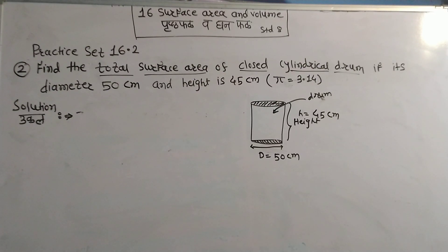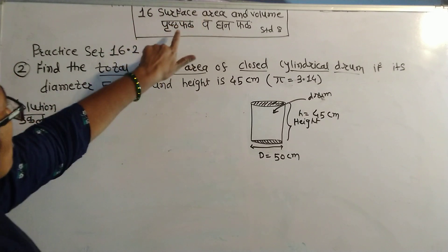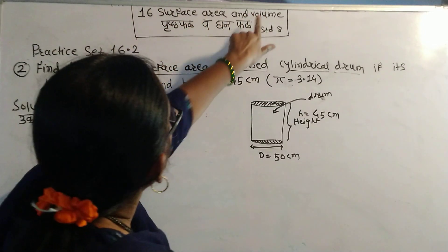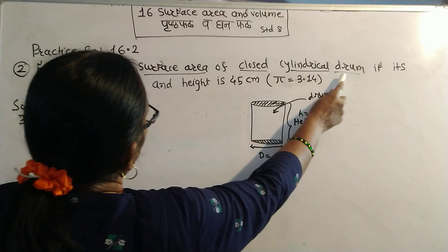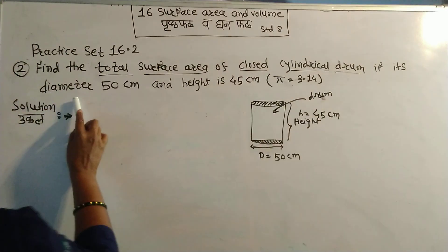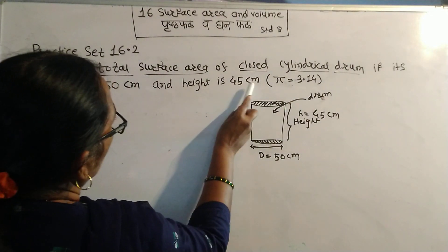Surface area and volume, Frustafal or ghanafal. Practice Set 16.2, question 2: Find the total surface area of a closed cylindrical drum if its diameter 50 cm and height is 45 cm.